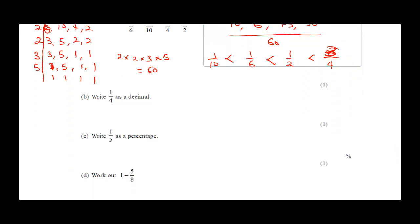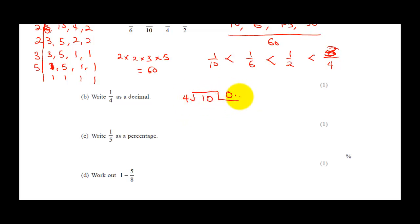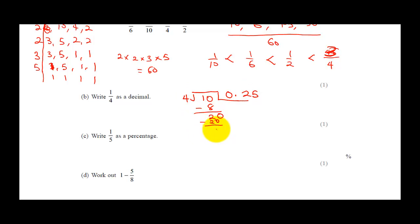The next question: write 1/4 as a decimal. Using long division: 4 into 1 cannot go, so write 0. and carry over. 4 into 10 goes 2 times (4 × 2 = 8), remainder 2. 4 into 20 goes 5 times (4 × 5 = 20), remainder 0. So 1/4 = 0.25, which we call a quarter.